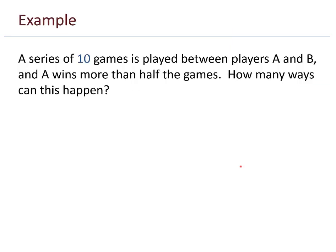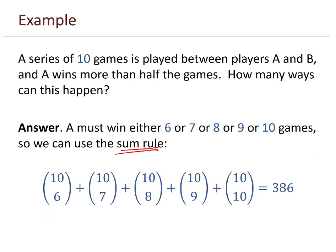Another example. A series of 10 games is played between players a and b, and a wins more than half the games. How many ways can this happen? Well, 10 games, a wins more than half, so a has to win either 6 or 7 or 8 or 9 or 10. So I can split this up into those different cases. This is really a sum rule problem. Distinct cases. How many ways can A win 6 games? That's really 10 choose 6. It's like I have the 10 blanks, and I imagine putting A's in the blanks for when A wins the game. So there's 10 choose 6 ways to do that. Likewise, there's 10 choose 7 ways, 10 choose 8, choose 9, choose 10 for the other cases. Add them all up, and we get our solution.